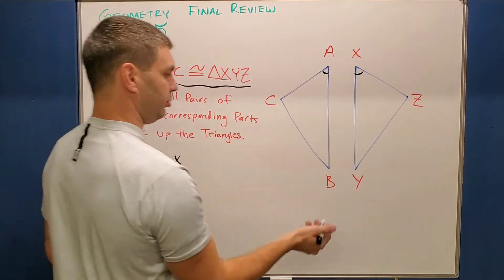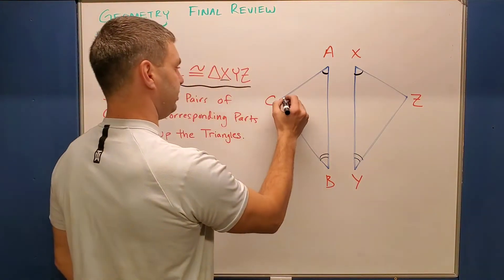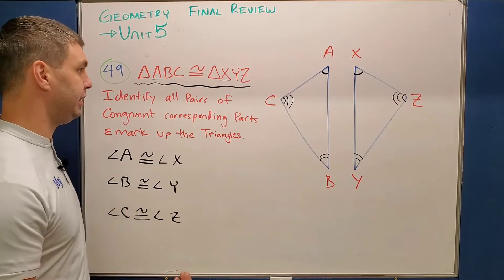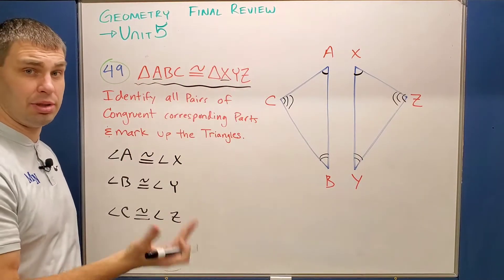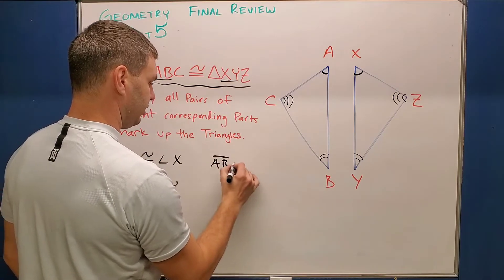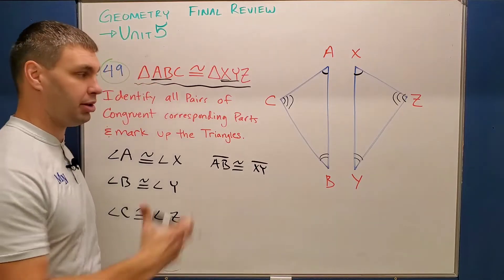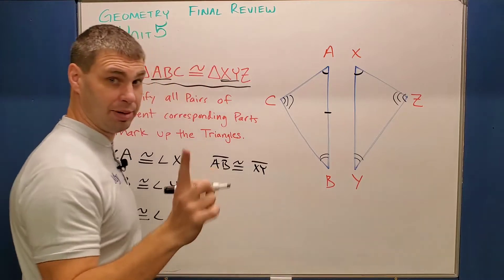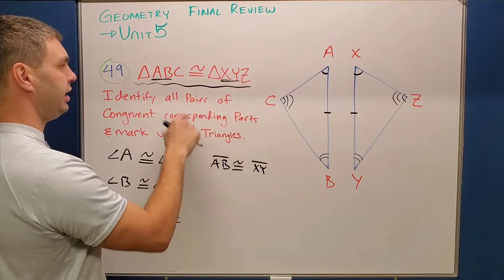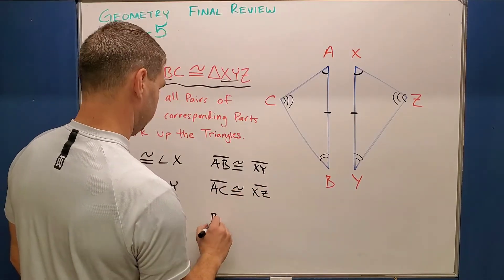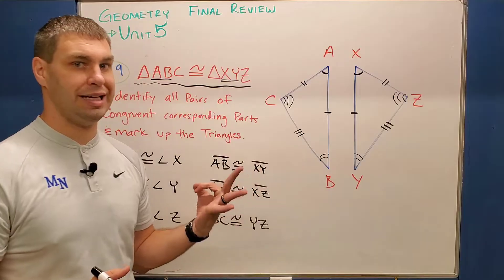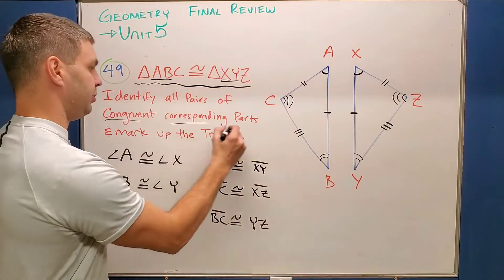If I mark those angles up: B and Y were in the second position, C and Z were in the third position. B goes with Y, so I'll give each of those two loops. Then C I'll give three loops and Z I'll also give three. So those are angles. Now we also have three pairs of congruent side lengths, and we can use our congruent statement similarly. Using the first two letters: AB is going to go with XY. So side AB is congruent to side XY. I'll mark that up — AB is this vertical side, one tick mark, and XY the same. I'll do the same for AC and XZ, as well as BC and YZ. So we have three congruent angles and three congruent side lengths — six total congruent corresponding parts of these triangles.